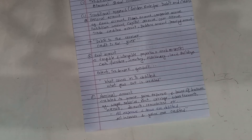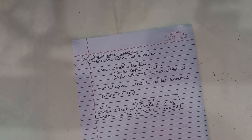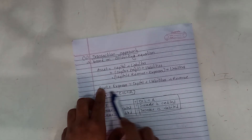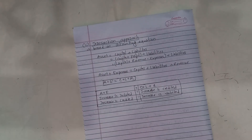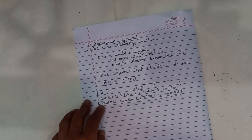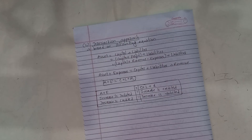In the financial statement income statement, expenses and losses are debited and all incomes and gains are credited. The transaction approach is based on the accounting equation: Assets = Capital + Liabilities + Revenue − Expenses. For assets and expenses, increase means debit and decrease means credit. For capital, liabilities, and revenue, increase means credit and decrease means debit — the opposite relation.